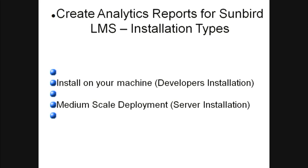Now I will talk about the installation types, which is important because we need to know which installation we will use for our development purpose. One option is to install it on your machine — this is basically a portal installation. Another is a medium scale installation. In the first installation, it will install only the front end; in the second, it installs both front end and back end. However, the medium scale deployment is not currently available. It uses Docker technology, as mentioned by my earlier speaker.